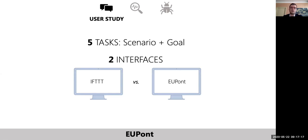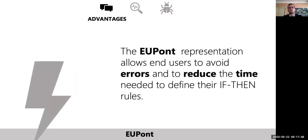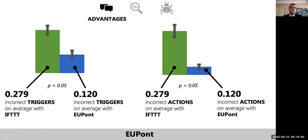Our aim was to understand whether the EUPont representation helped users define if-then rules effectively and efficiently, especially with respect to representation models of contemporary trigger-action programming platforms like If This Then That. We followed a within-subject procedure. Each participant completed five different tasks using two web interfaces — one with triggers and actions of If This Then That, and the other with EUPont triggers and actions. A task was composed of a scenario describing a generic user and their devices and services, and a goal defining a specific need that could be satisfied through one or more if-then rules. The results show that the EUPont representation reduced the errors made by participants in solving the tasks, and also reduced the time needed to define each rule. We found a significant difference in incorrect triggers and actions between the two interfaces — participants using the If This Then That interface were more likely to introduce errors.